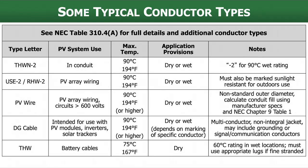Here's a table, NEC 310.4A, which shows some of the different conductor types. This is an excerpt of that table — it's pretty long and has all kinds of conductor types in it. These are really just the ones that we use in PV systems, and two of them aren't actually in this table. The table covers a wide range of wires and types used for all kinds of different applications.